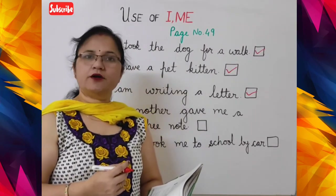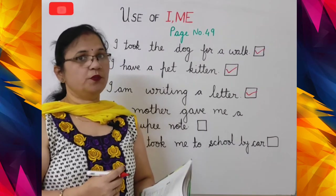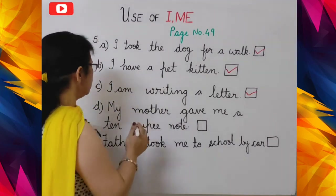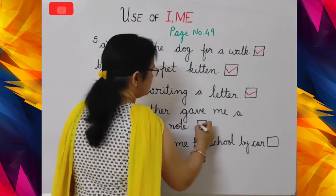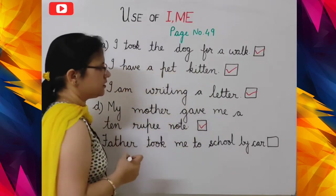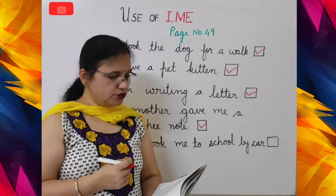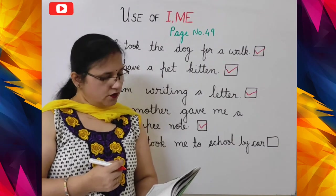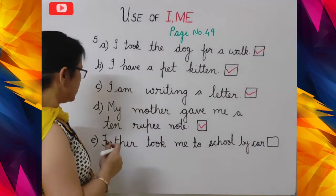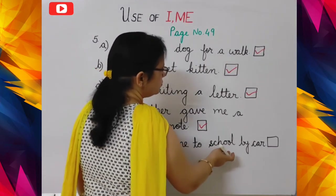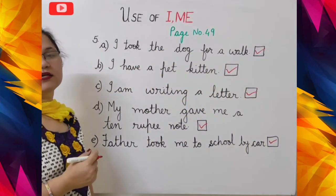'My mother gave me a 10 rupee note' versus 'My mother gave I a 10 rupee note'. The correct sentence is 'My mother gave me a 10 rupee note' — put a tick in front of it. Next: 'Father took me to school by car' versus 'Father took I to school by car'. The correct one is 'Father took me to school by car' — put a tick in front of that sentence.